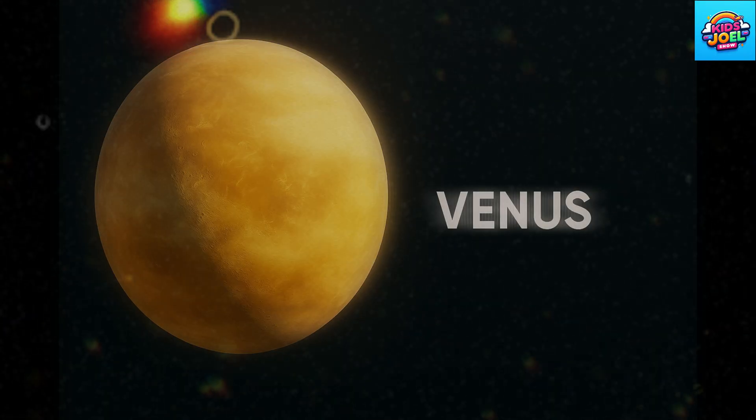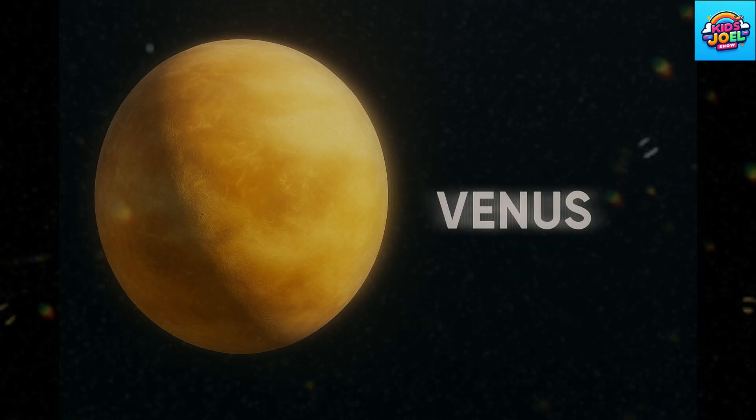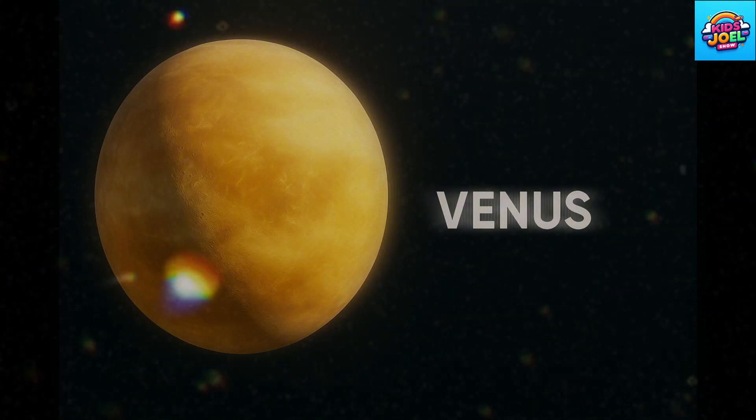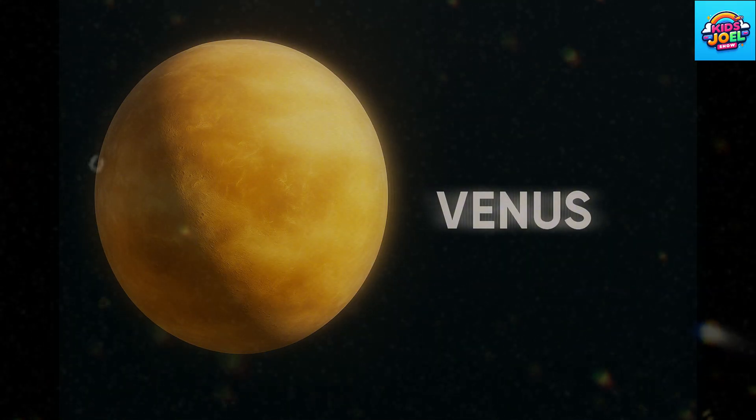Two Venus is so very bright, shining like a star at night. Covered in clouds, it's hot all day, the second planet on its way.